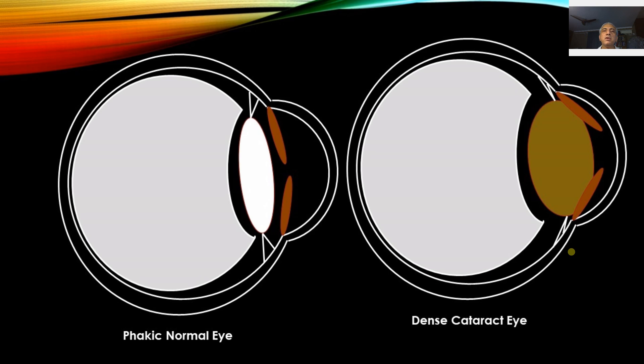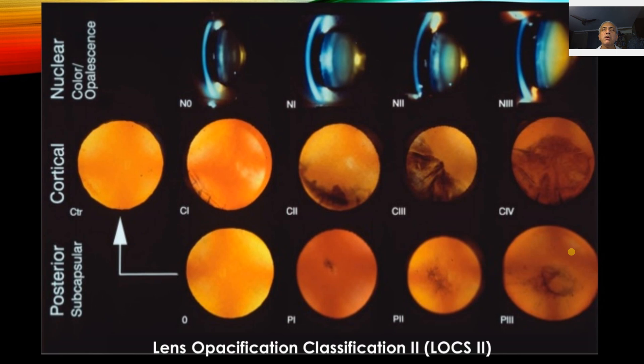Whenever you see a lens, you need to classify the grading of the cataract so you can track progression. You classify according to the Lens Opacification Classification System (LOCS II), which has three categories: nuclear opalescence or color, cortical spokes, and posterior subcapsular cataract. Nuclear opalescence is seen with a slit beam, while cortical and posterior subcapsular opacification are seen in a dilated pupil with retroillumination using red reflex.